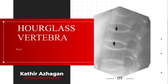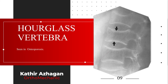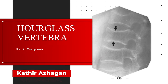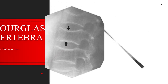Hourglass vertebra is seen with senile osteoporosis. This occurs because the end plates are compressed by upward and downward protrusion of intervertebral disc material, which is more pronounced in the mid portion of the body compared to the periphery, giving rise to the hourglass appearance.